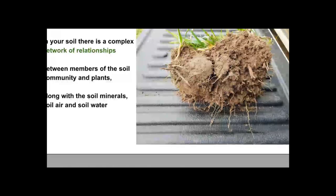In your soil, there's a complex network of relationships between members of the soil community, plants, soil minerals, soil air and soil water. It sounds like a complicated recipe, and it is a bit complex — but in essence it's a whole lot of relationships going on simultaneously with billions of microbes, tens of thousands of soil organisms, hundreds of kilometres of fungal hyphae and roots, with climate and rainfall all influencing it. Our goal is to juggle it all and keep it in balance.